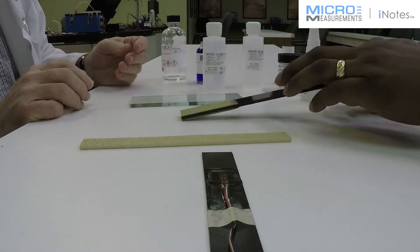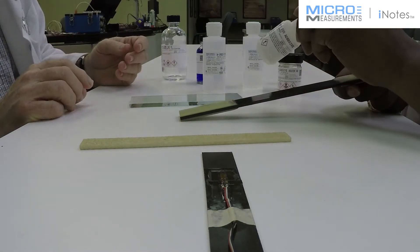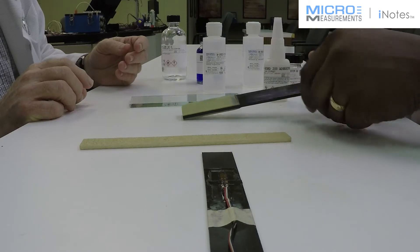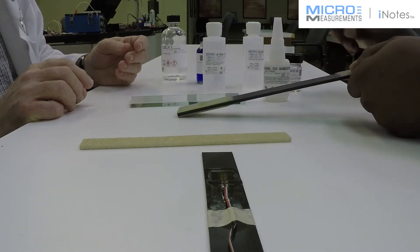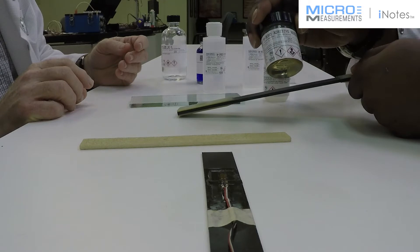Well, for the smooth surface here, I would use our M-Bond 200 adhesive. However, for the coarse or more rough surface that we see here, I'd go with our AE-10.